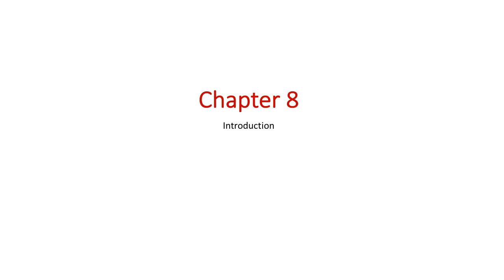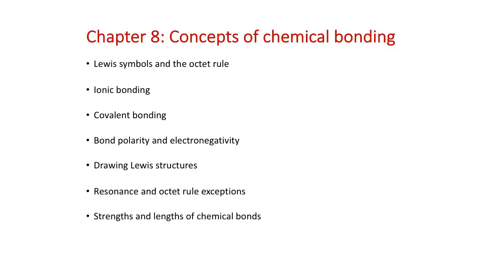Hello and welcome. This is the introduction to chapter 8. Chapter 8 is on the topic of chemical bonding. Some of the ideas in chapter 8 on the concepts of chemical bonding include Lewis symbols and the octet rule.